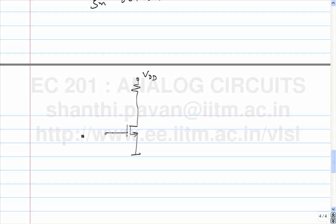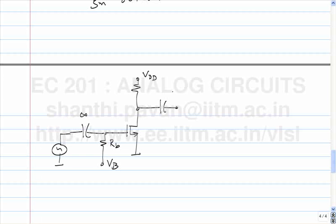With Vdd and some configuration, we have a gain from Vs to Vout, the incremental gain being equal to minus gm times Rf.